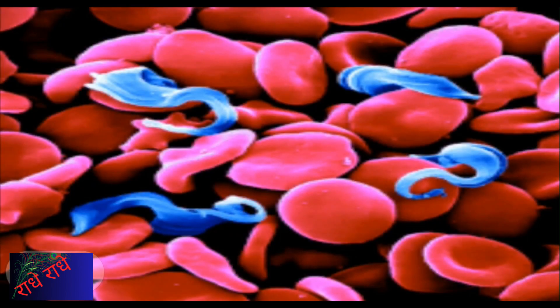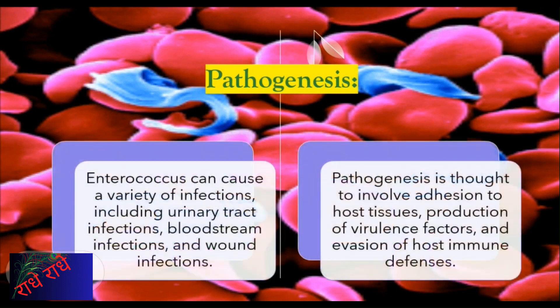Enterococcus is a type of bacterium capable of causing a wide range of infections, ranging from urinary tract infections to bloodstream infections and even wound infections. It is able to achieve this by adhering to host tissues, producing virulence factors, and evading the human immune system. To combat these infections, it is important to recognize the different potential sources and methods of infection in order to take preventive and corrective measures.